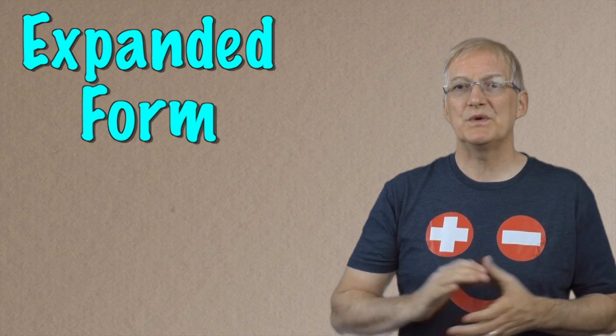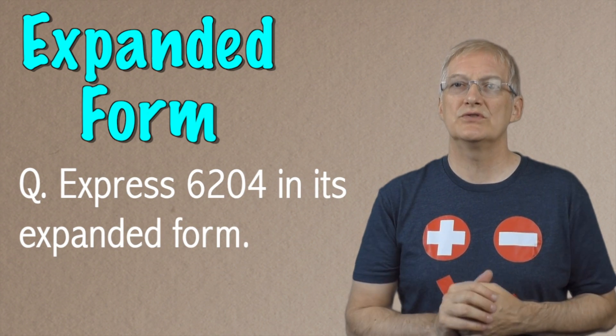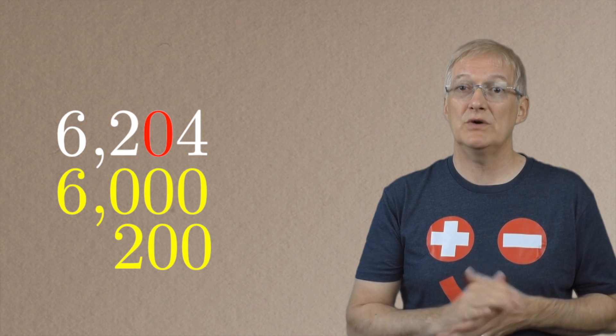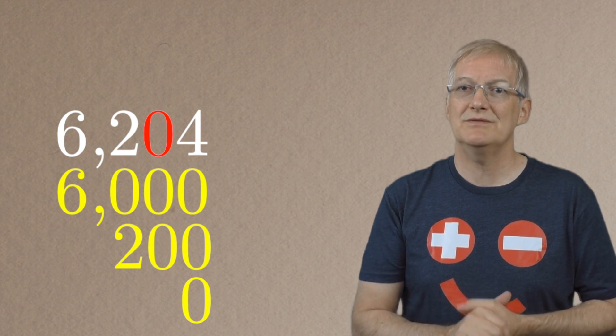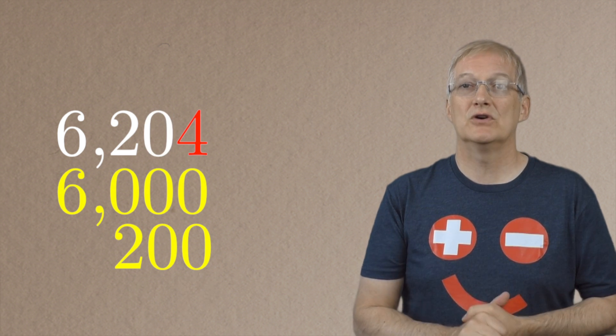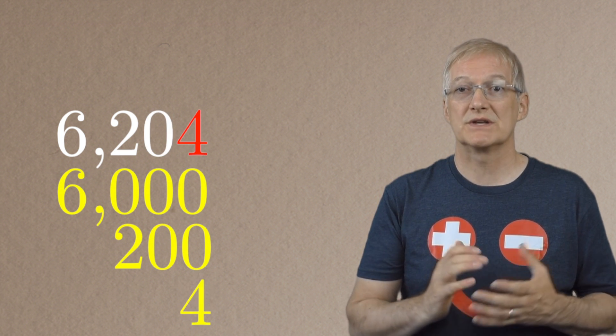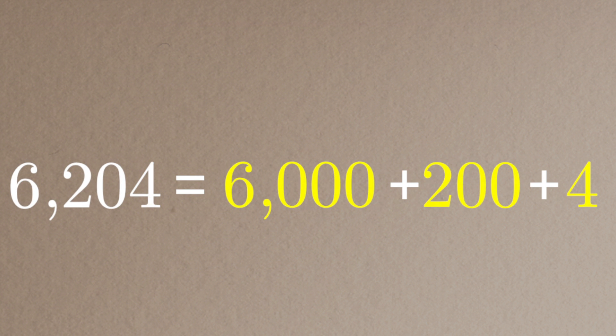Let's try another one. How would we express 6,204 in its expanded form? The 6 is in the thousands place, so that represents 6,000. The 2 is in the hundreds place, so that represents 200. There's a 0 in the tens place, so that represents no groups of 10. And we've got a 4 in the ones place, so we've got 4. So the expanded form of 6,204 is simply 6,000 + 200 + 4. Pretty simple!